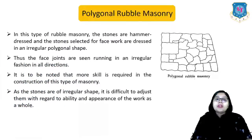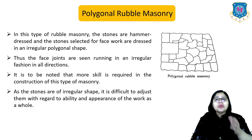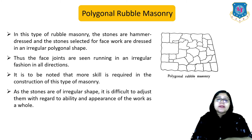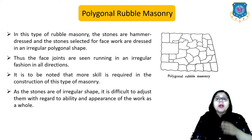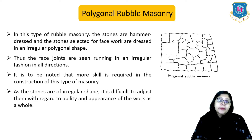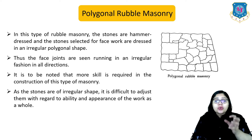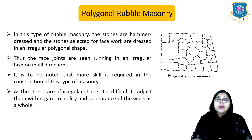In polygonal rubble masonry, the stones are hammer-dressed and the stones selected for face work are dressed in an irregular polygonal shape. The face joints are seen running in an irregular fashion in all directions. More skill is required in the construction of this type. As the stones are of irregular shape, it is difficult to adjust them with regard to stability and appearance of the work as a whole.